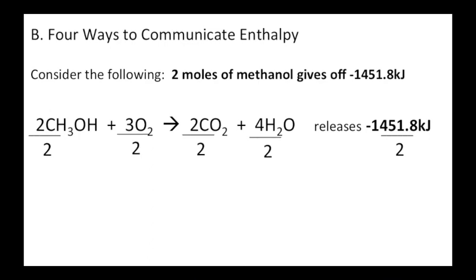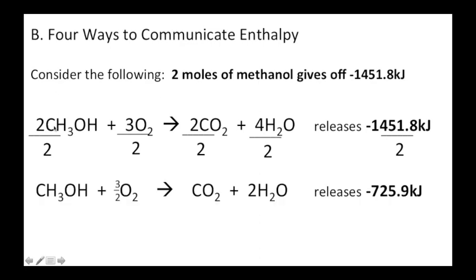Now, what I do to one thing in a reaction, I've got to do to all of them. So, here's what my reaction would look like. Two gives off 1451.8. If I just burn one methanol, everything has been divided by two. Two divided by two is one. Three over two is 1.5. Two over two is one. Four over two is two. 1451.8 divided by two is 725.9. So, we can do that in this unit. We can take a reaction and double it, cut it in half, or triple it. We're going to do lots of different things.